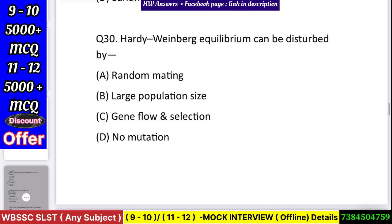Question number 31: Hardy-Weinberg equilibrium can be disturbed by — random mating, large population size, gene flow and selection, or no mutation? Answer: gene flow and selection.